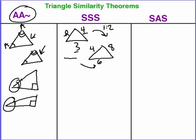So if you can find a consistent scale factor from all three sides, then I know that those two triangles are similar. Key thing here is all of the sides have to be corresponding. They have to all be proportional.